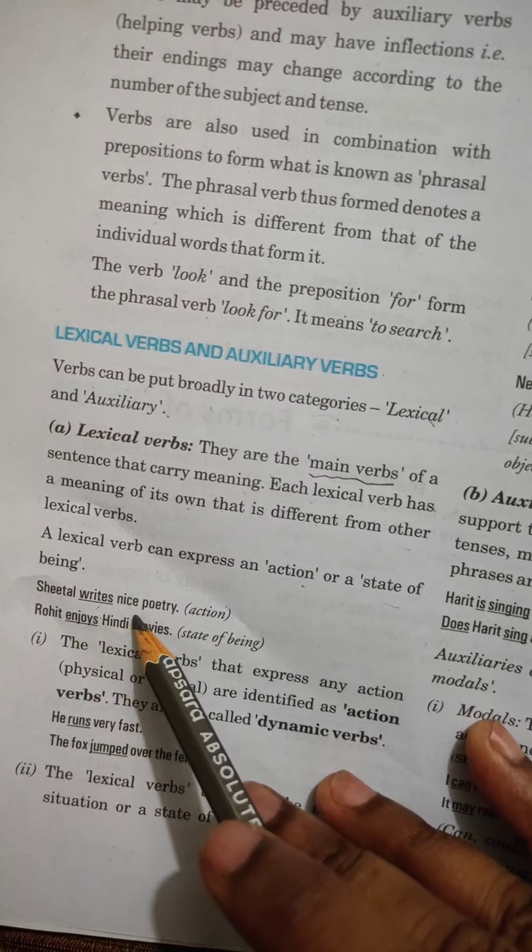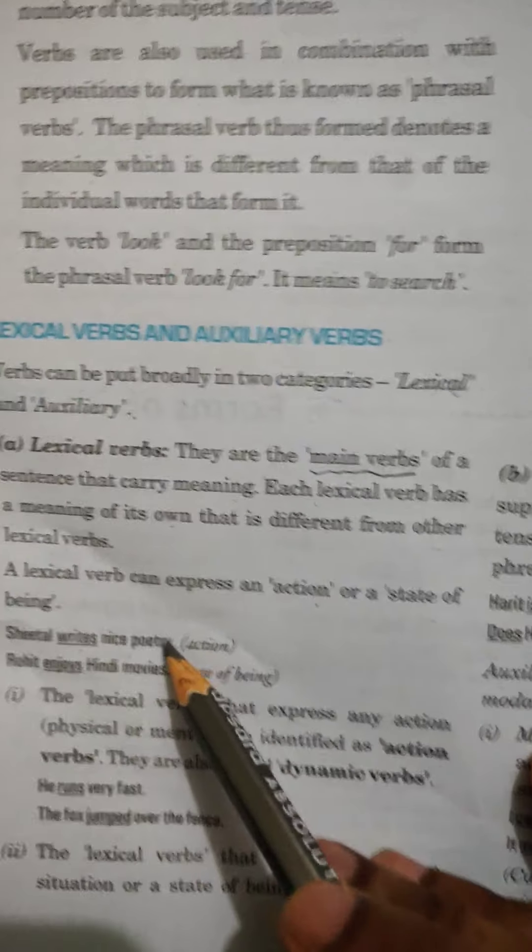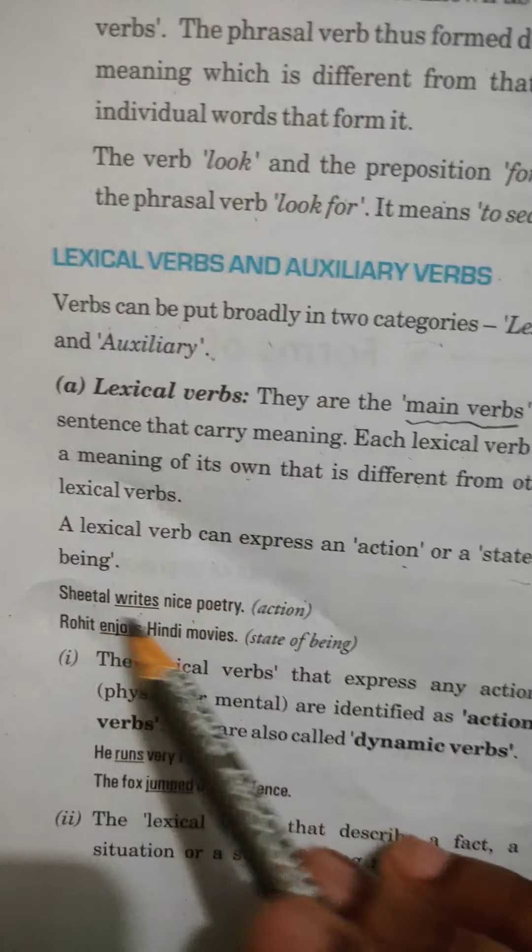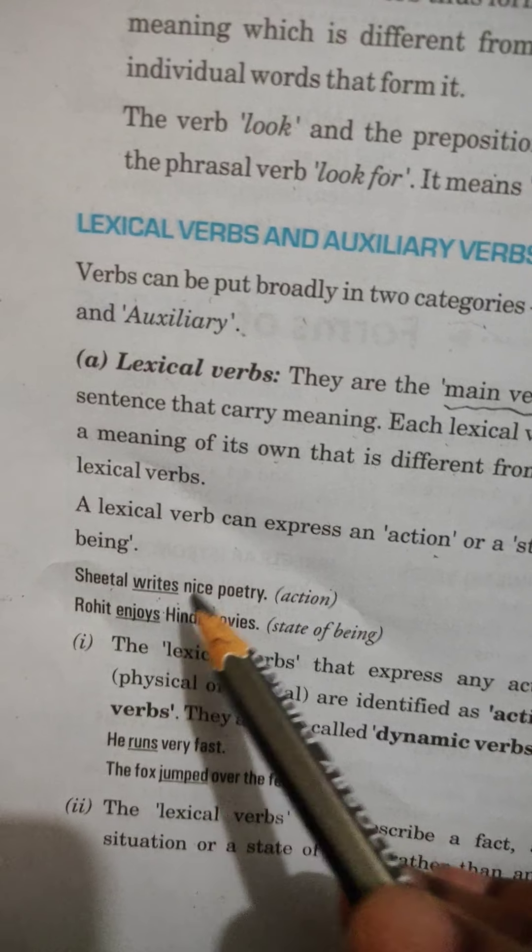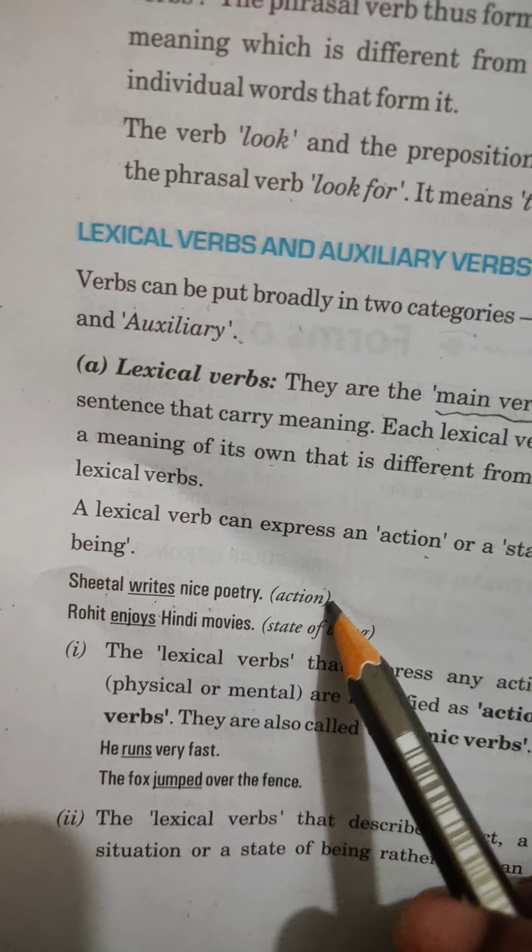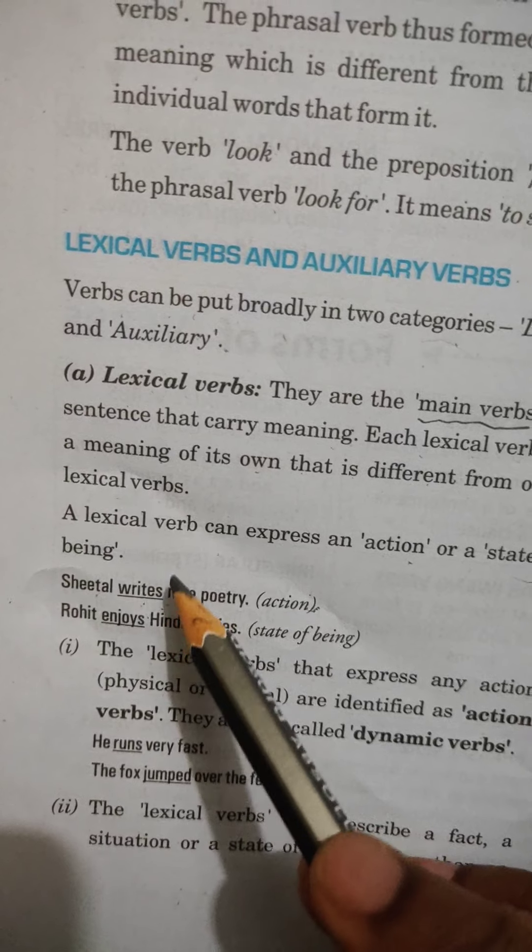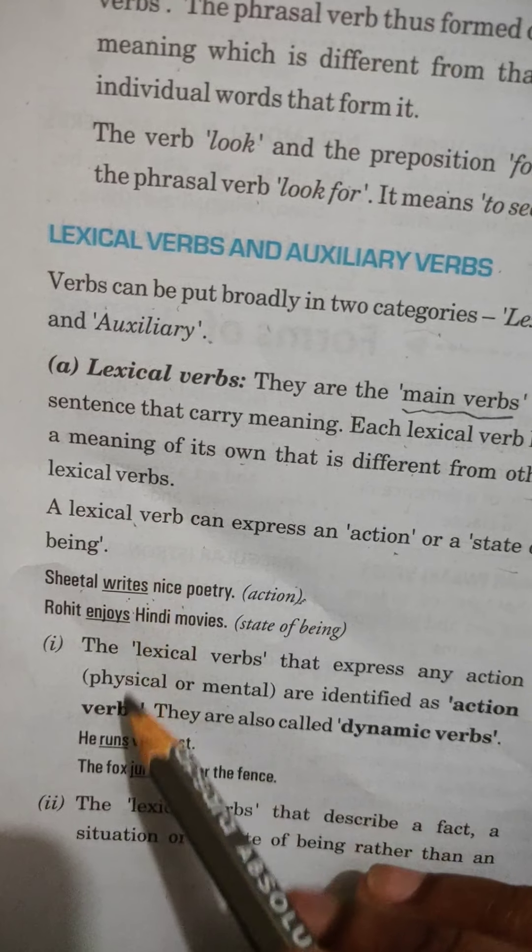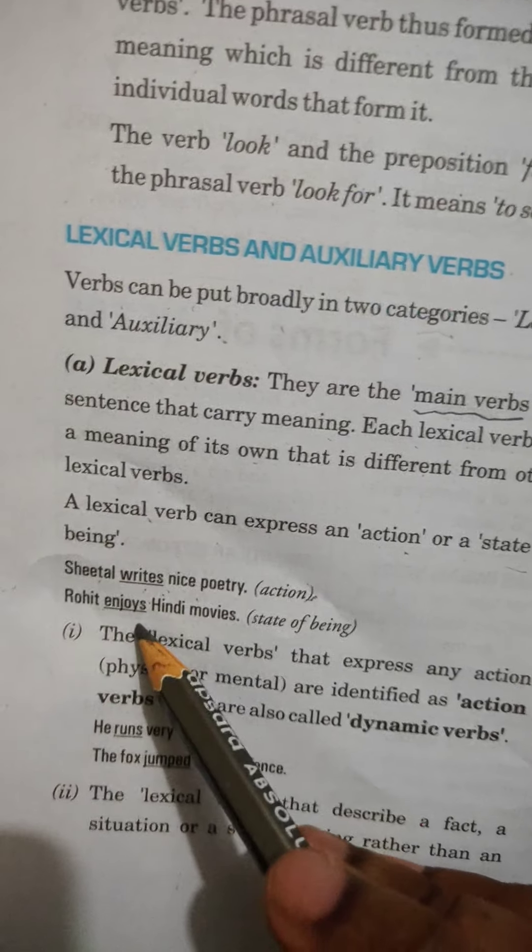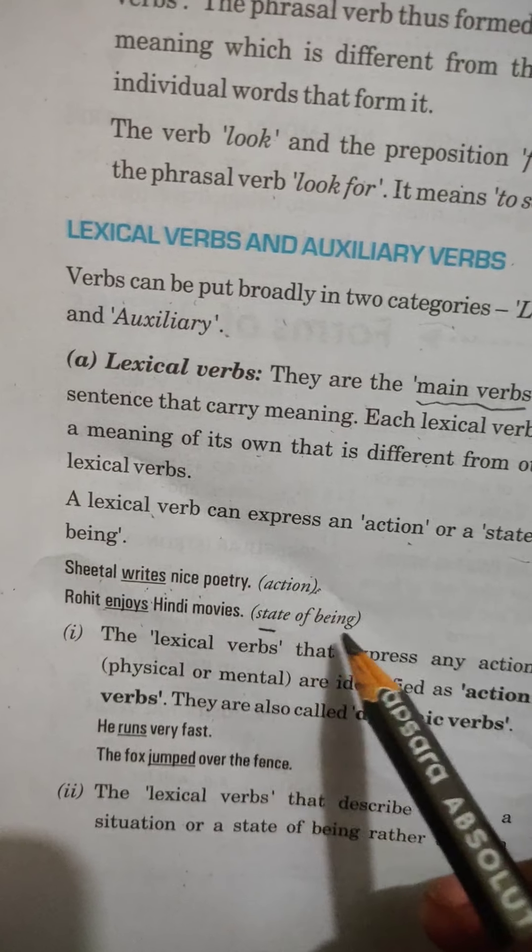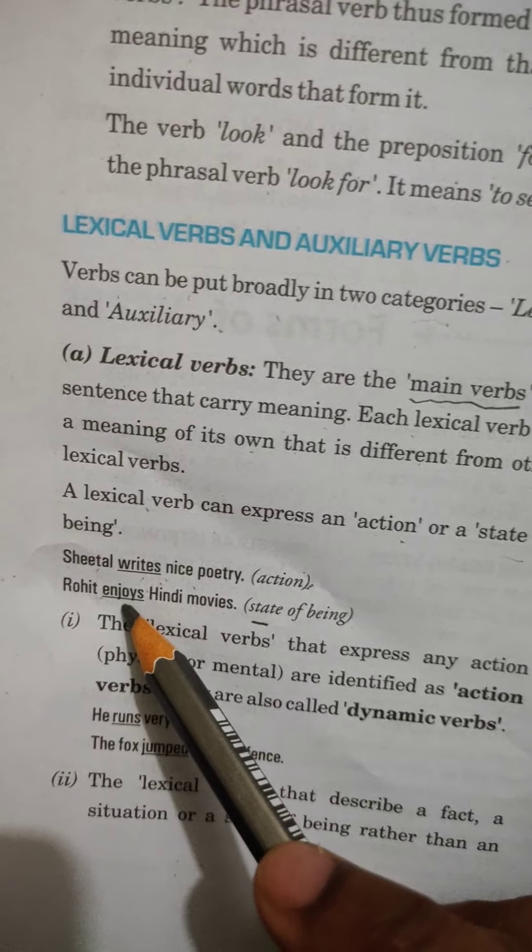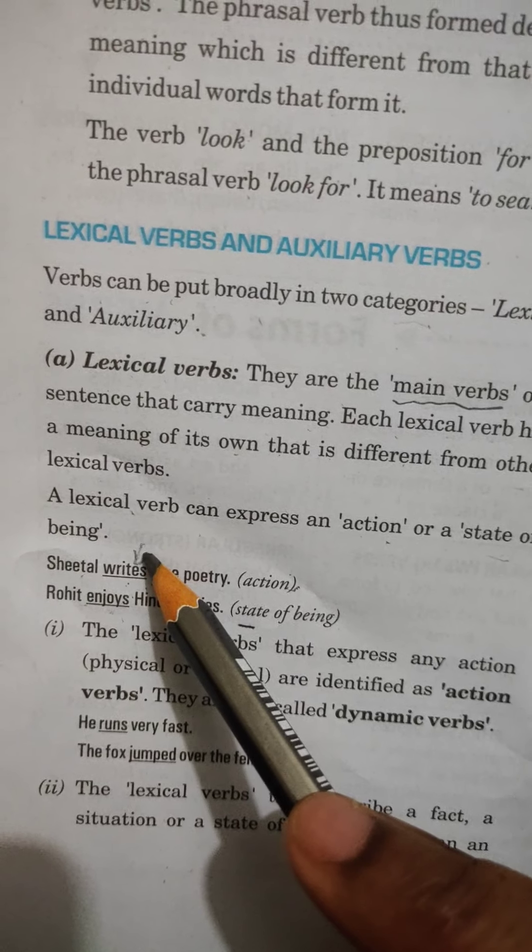A lexical verb can express an action or a state of being. For example, Sheetal writes nice poetry. After Sheetal, you are getting a word writes here. So, this is an action. Therefore, this will come under the category of lexical. Rohit enjoys. Here this is a state of being. Here no action has been done. But here the action is done.